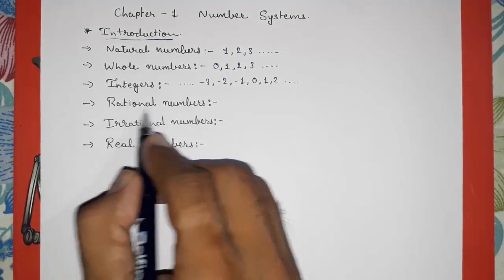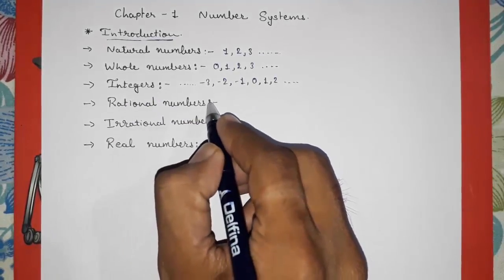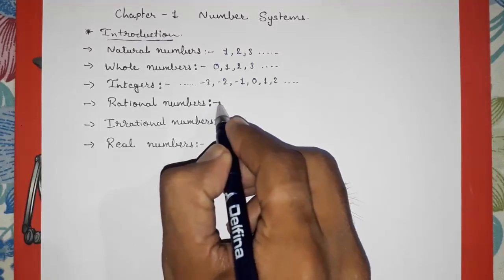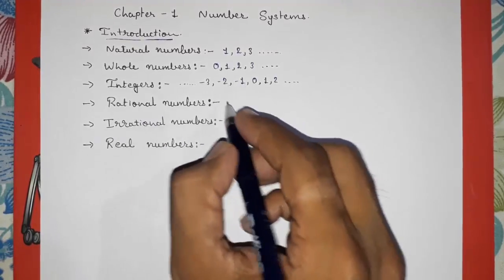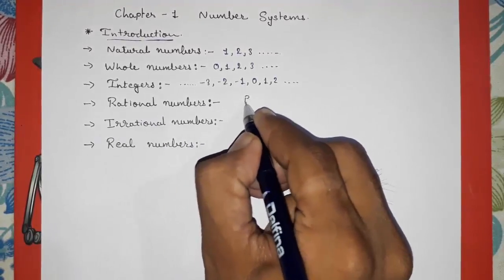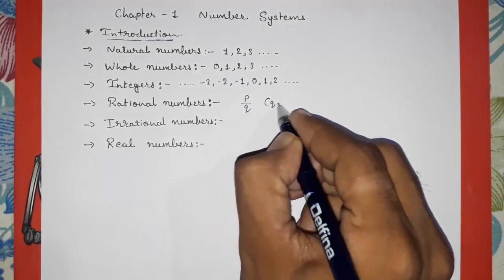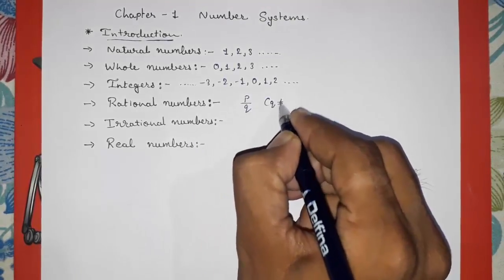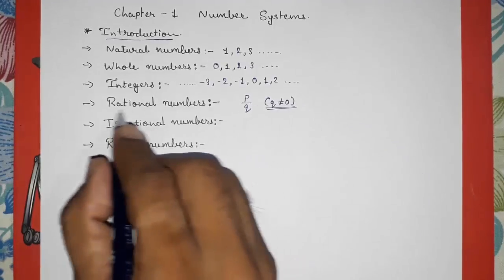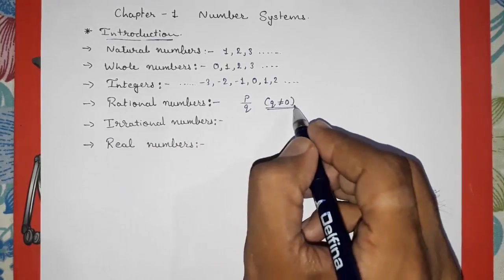Now, what are rational numbers? You also learned this in previous standards. Any number that can be represented in the form of p by q, where q should not be equal to 0, is called a rational number.